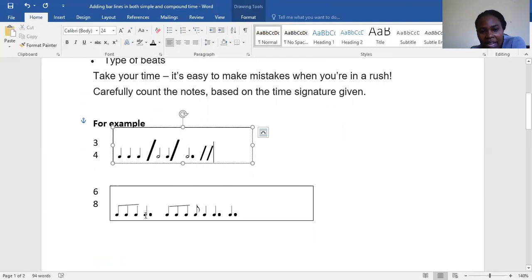A dotted crotchet has three, so three plus this three will make six.